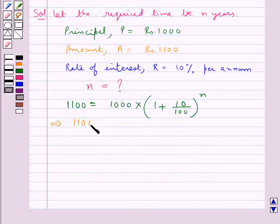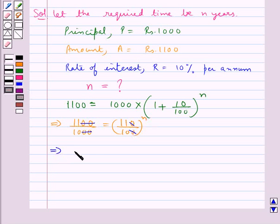That is, we have 1100 upon 1000 is equal to 110 upon 100 whole to the power N. These two zeros cancel with these two zeros, this zero cancels with this zero, so we have 11 upon 10 is equal to 11 upon 10 whole to the power N.